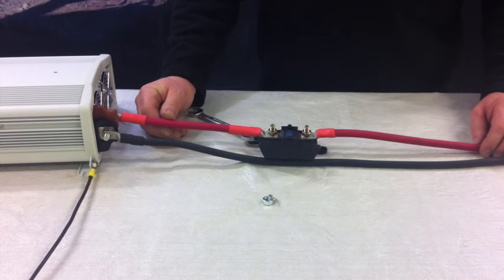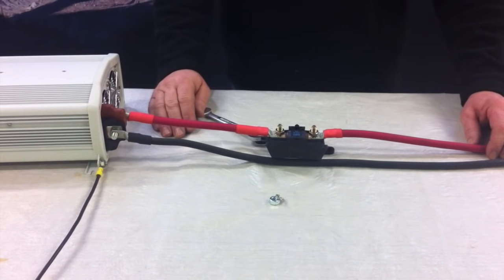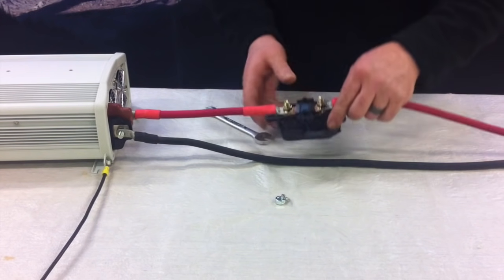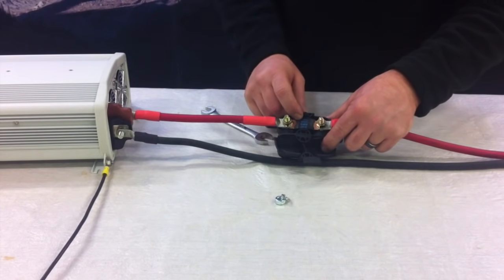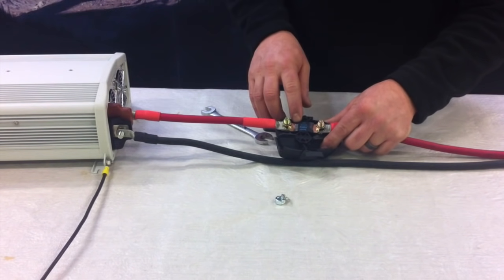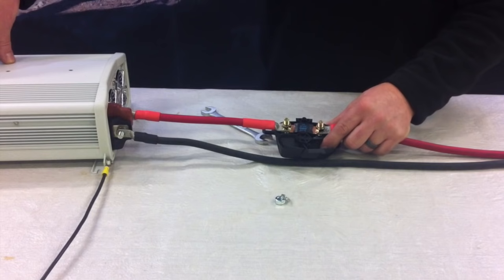Okay now that we've got our cable assemblies completed we're going to go ahead and do the installation. So basically we've got our fuse block which holds our fuse. We've got the appropriate size fuse for the size of the inverter. In this case we're using a 200 amp fuse for a 2,000 watt inverter.